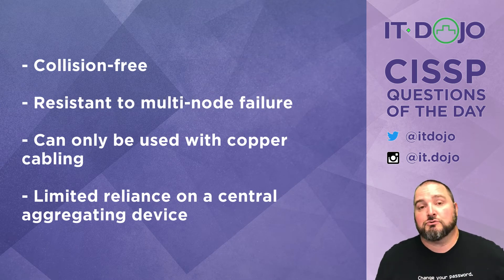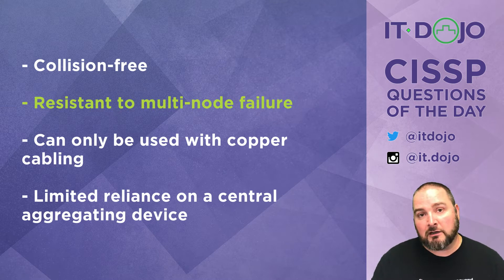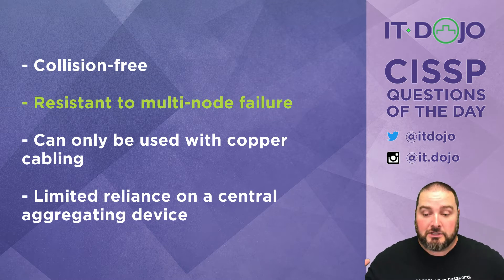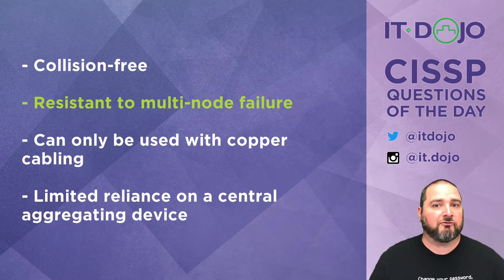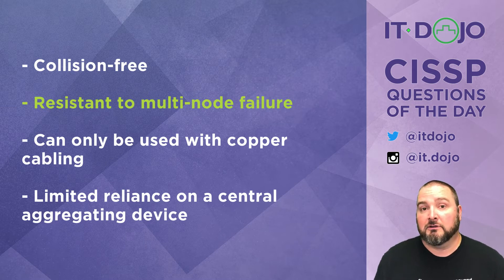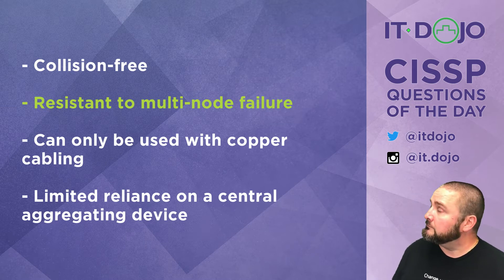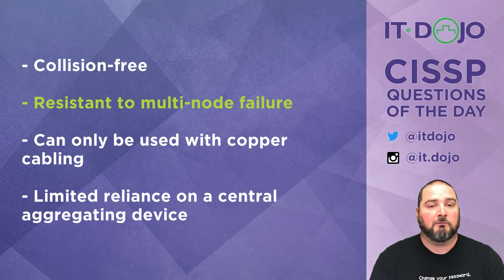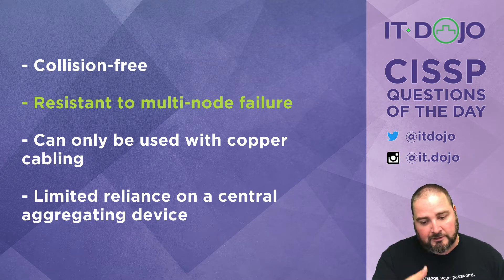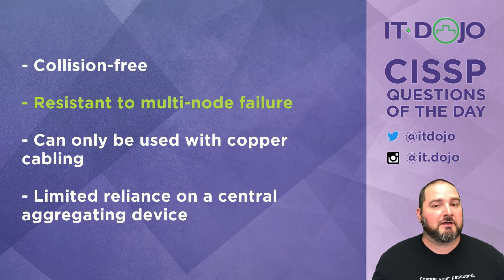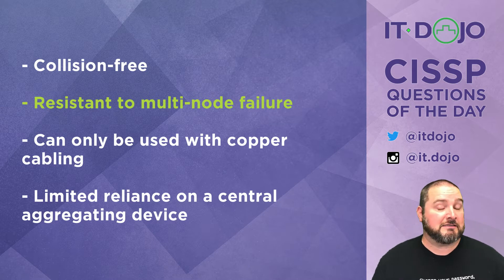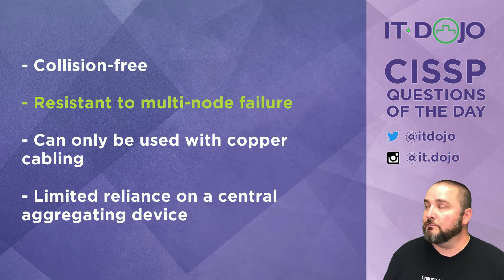The next item says it is resistant to multiple node failures — this is a true statement. One of the single biggest advantages of a star topology is that every single node has its own connection point into the aggregator, which can be a hub, switch, or something like that. So if something bad happens to one physical connection, only that device is kicked out.